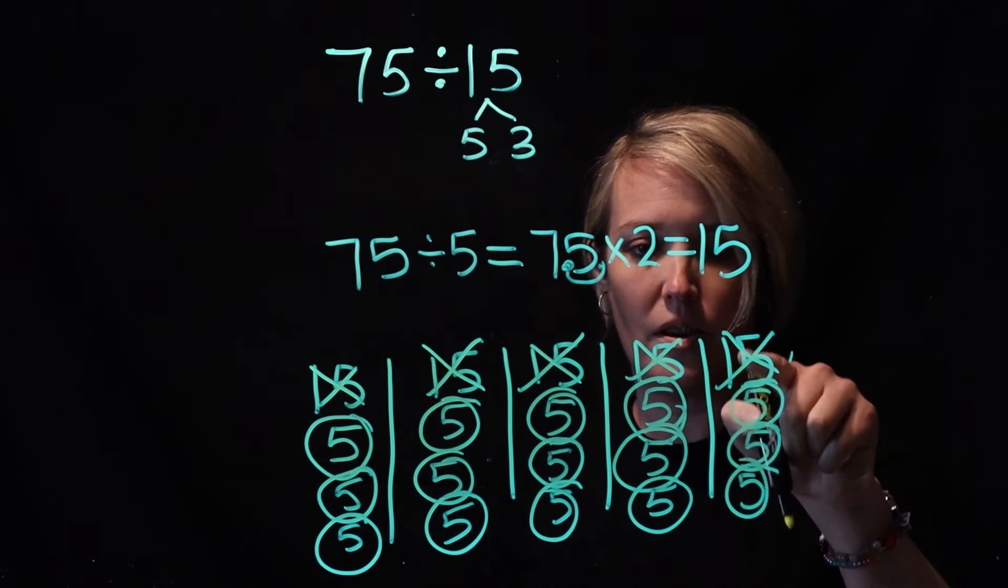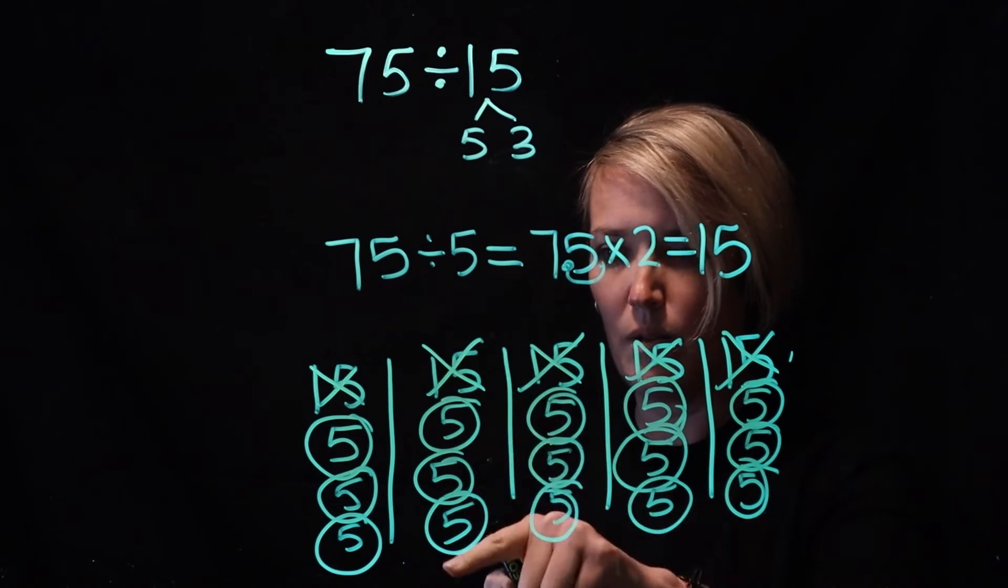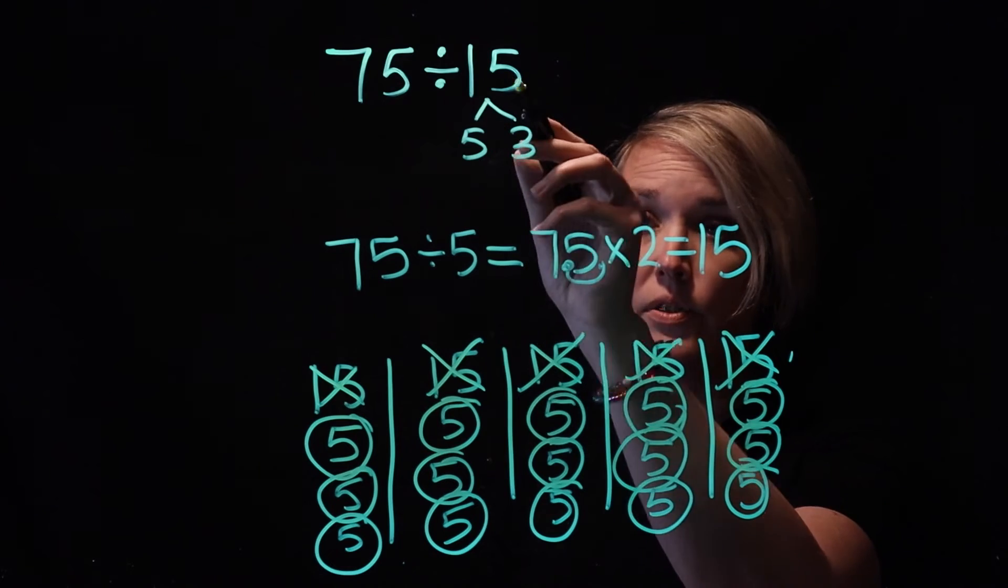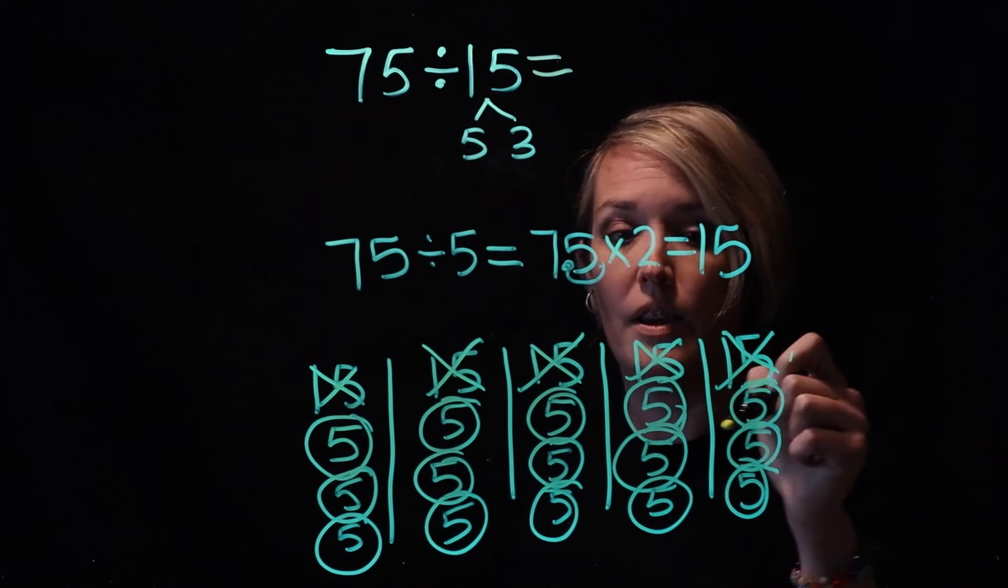So she's got 3, 6, 9, 12, 15 equal groups. So she said 75 into 15 equal groups is just 5.